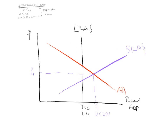What we say is that this situation is unsustainable. In the long run, we must end up back at potential GDP. So how do we end up at potential GDP? How can we explain it, and how can we graph it?